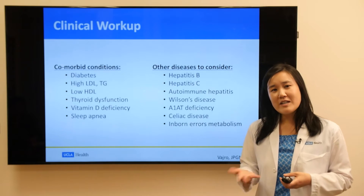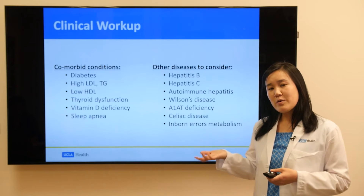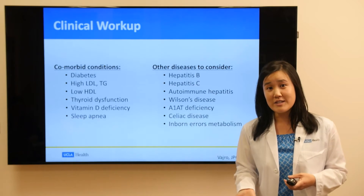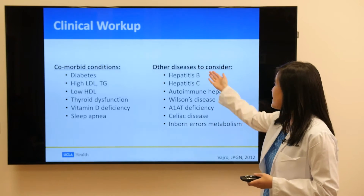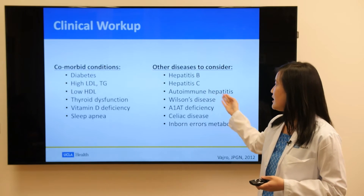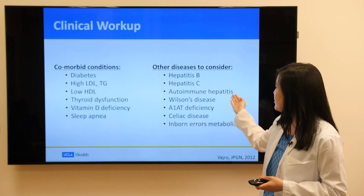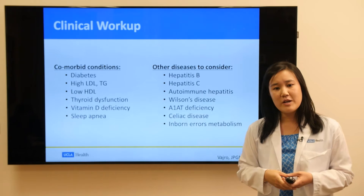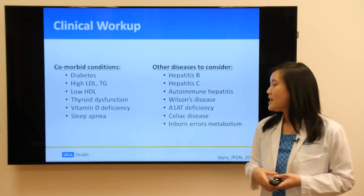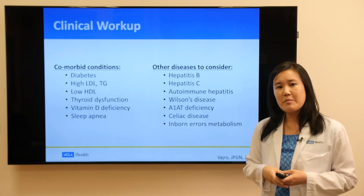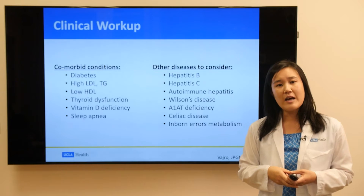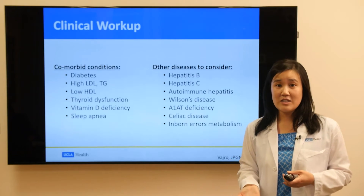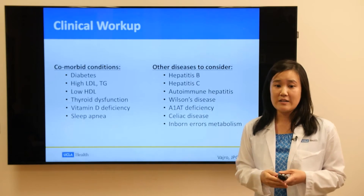More testing might be required to make sure we're not missing other causes of liver disease. For example, hepatitis B, hepatitis C, autoimmune hepatitis, Wilson's disease, alpha-1 antitrypsin deficiency, celiac disease, and other inborn errors of metabolism can lead to elevated ALT, which might masquerade as fatty liver.